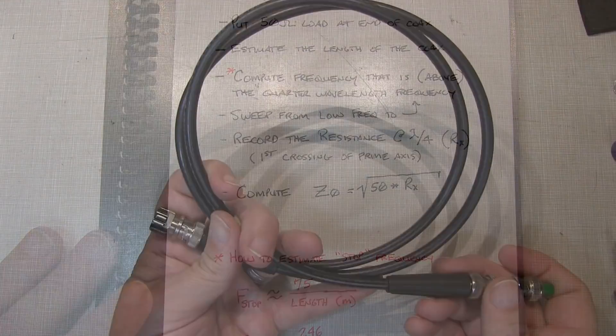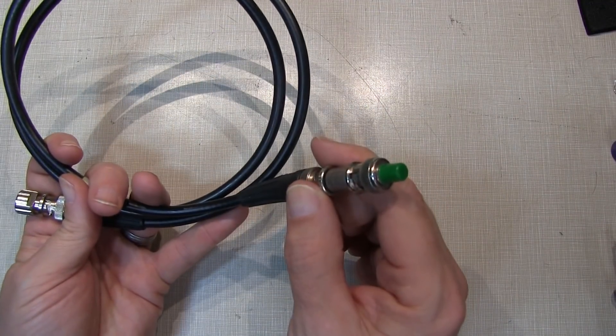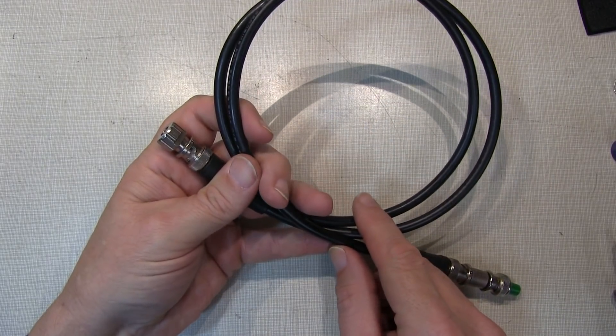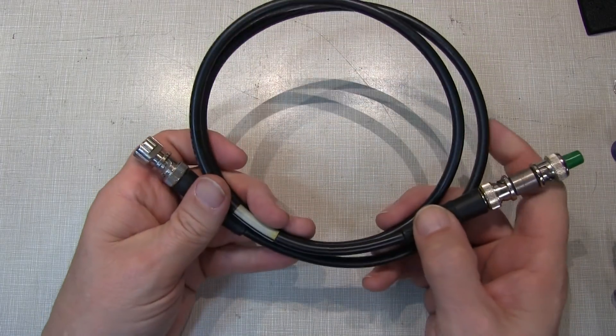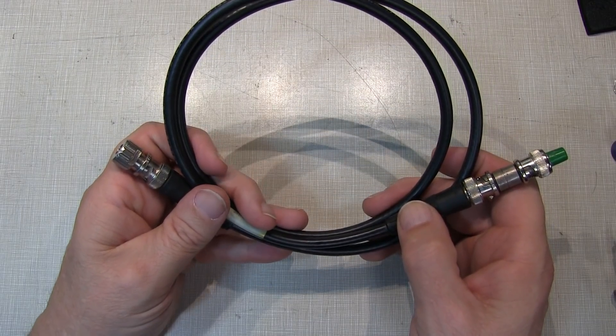So let's go do it. So here's my unknown coax here. I've got a 50 ohm termination at one end, and I've just got an adapter to an SMA connector at this end so we can hook it up to the VNA. I've estimated the line length to be about one meter long. That translates to 75 megahertz as a stop frequency.